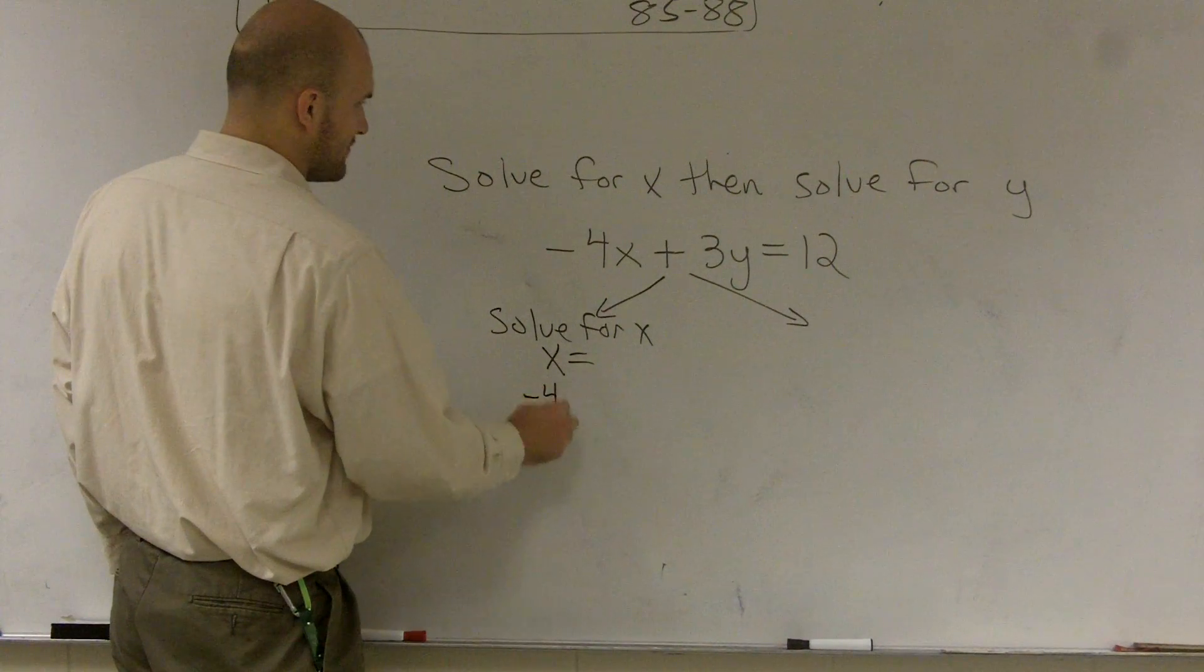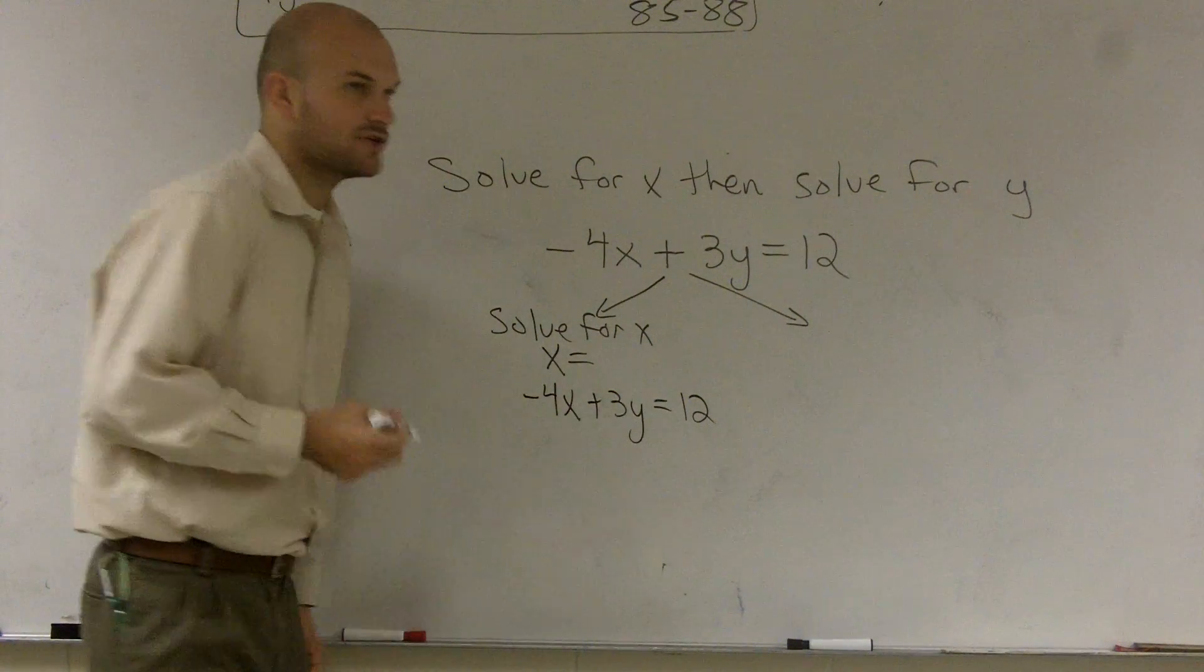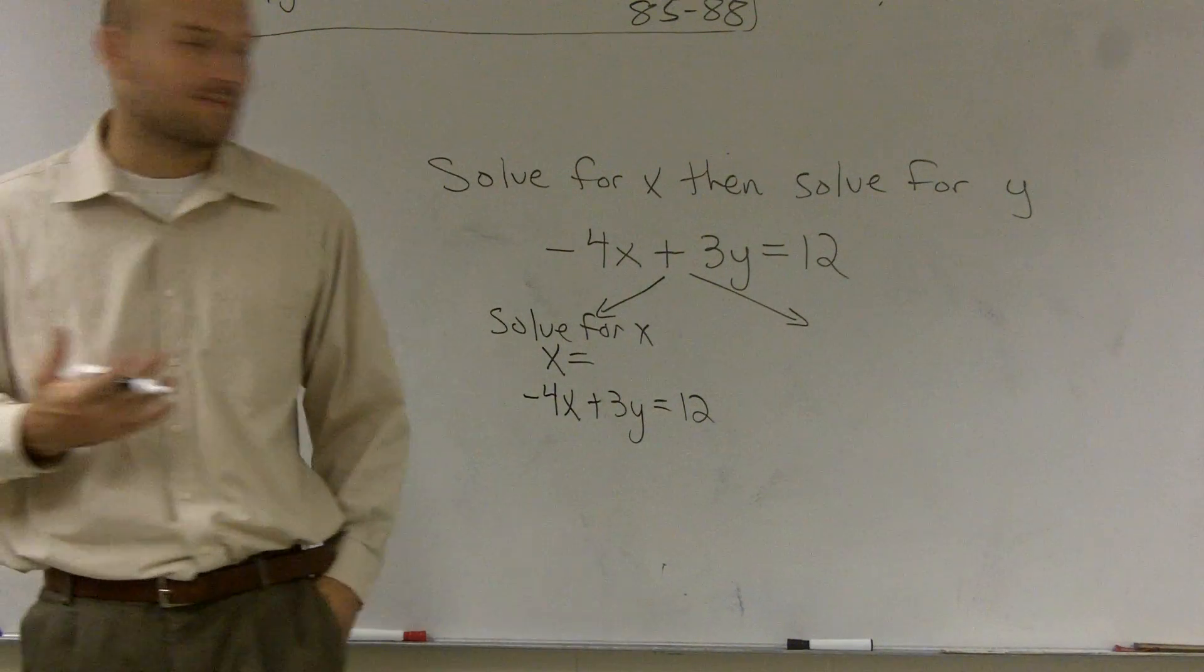So over here, if you guys can see, I have a negative 4x plus 3y equals 12. So I look and say, what is everything that's happening to my x?